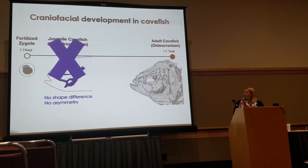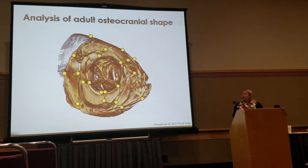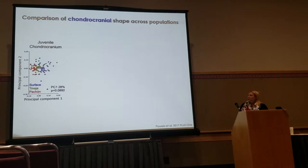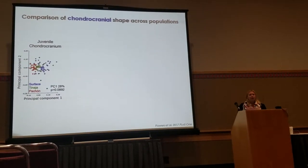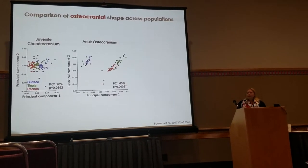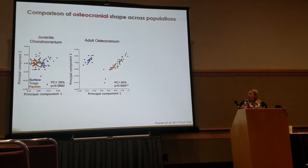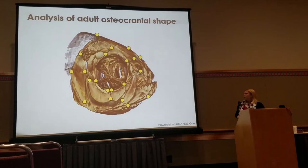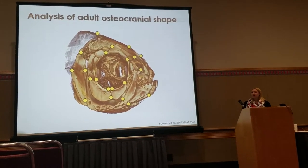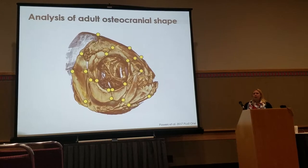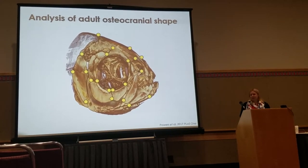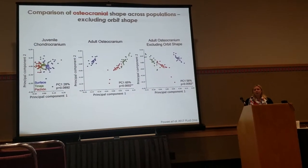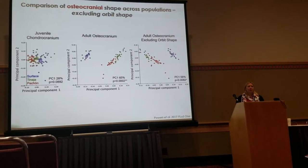We then looked at adults, performing a similar analysis setting landmarks on the skull in 3D using CT technology. The chondrocranium showed overlapping shapes across all populations, but adult skull shapes are segregating — surface fish cluster separately from the two cave fish populations. We thought this might just be due to landmarks set around the eye, since the orbit is collapsing. We removed those landmarks and found the same result, confirming shape differences in the cave fish skull that are not just attributed to the orbit.